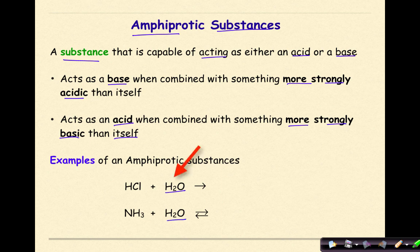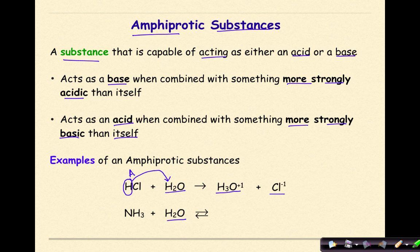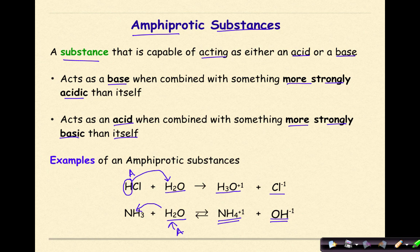Here we have water reacting with hydrochloric acid, which is an acid. In this case, water is going to act as a base — the HCl will fully dissociate, the hydrogen will be given over to the water molecule, and we will form the hydronium ion and a chloride ion. On the bottom, this water molecule is going to act as an acid because it's going to donate one of its hydrogens to the ammonia, forming the ammonium ion along with the hydroxide ion. So the water is acting as a base on top, and an acid on the bottom — it totally depends on what it's reacting with.